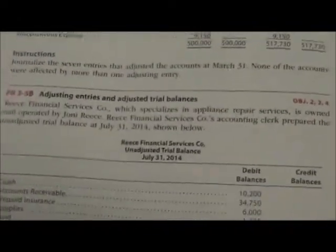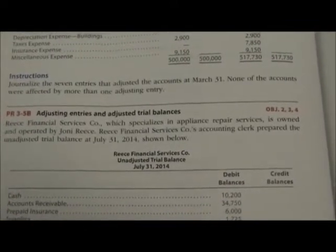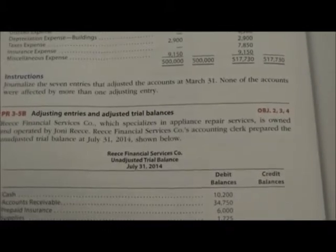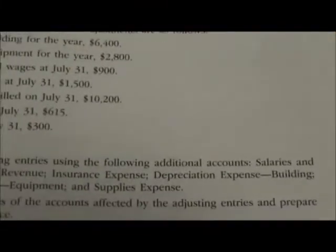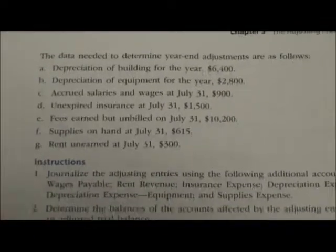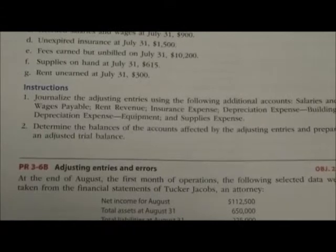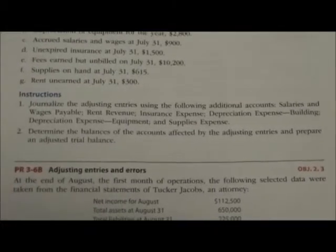We're going to start with the journal page. In our textbook, the problem says Reese Financial Services Company, which specializes in Appliance Repair Services, is owned and operated by Joni Reese. Reese Financial Services Company's accounting clerk prepared the Unadjusted Trial Balance at July 31, 2014 as shown below. It tells us the data needed to determine year-end adjustments are as follows, listing A through G. Our instructions say to journalize the adjusting entries using the following additional accounts. Step 2 says to determine the balance of the accounts affected by the adjusting entries and prepare the adjusted trial balance.